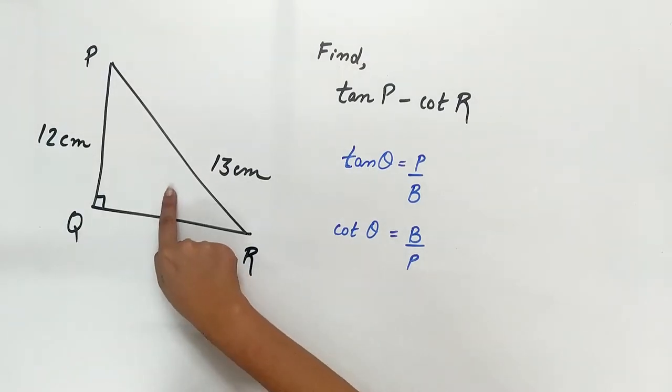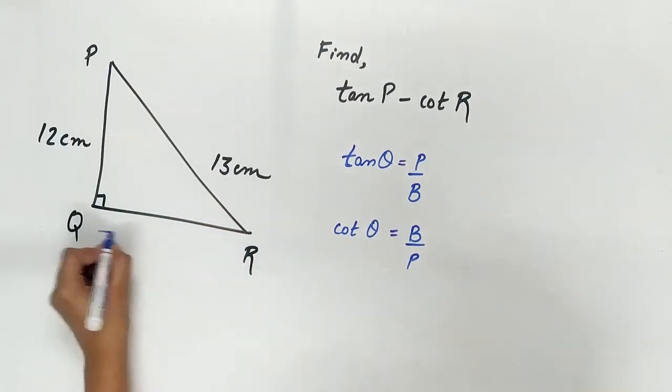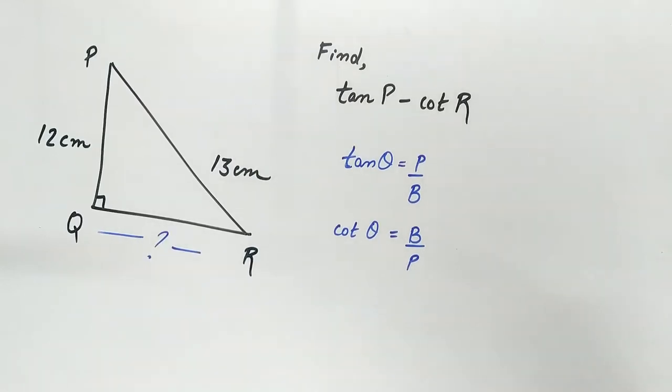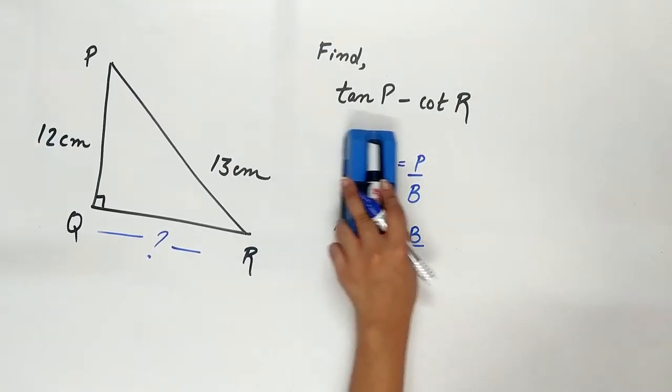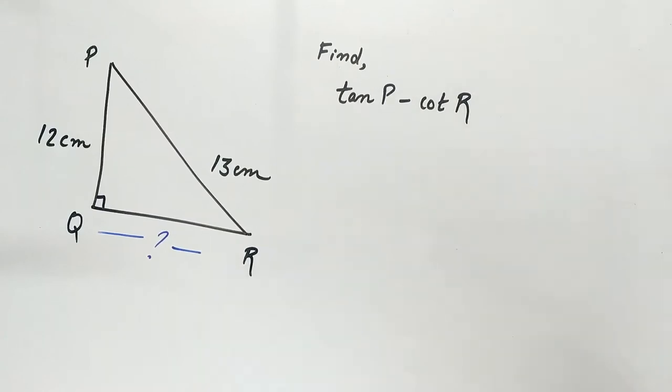We know hypotenuse PR but QR is not given to us. So, use Pythagoras theorem to find QR.